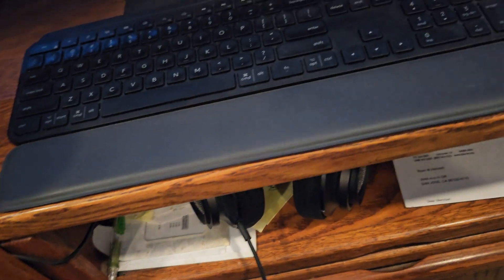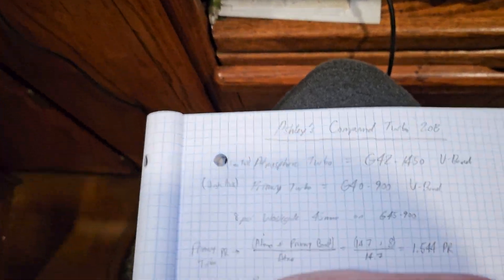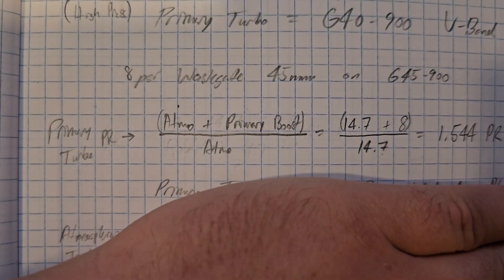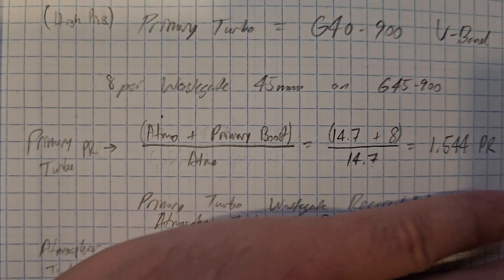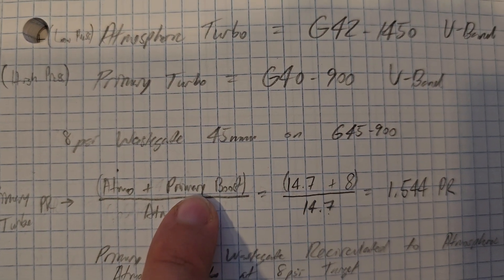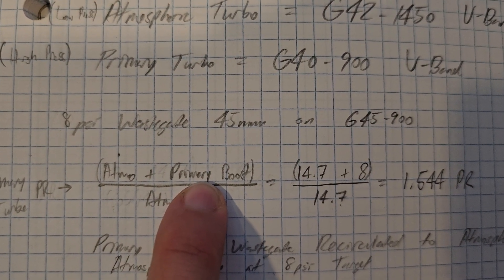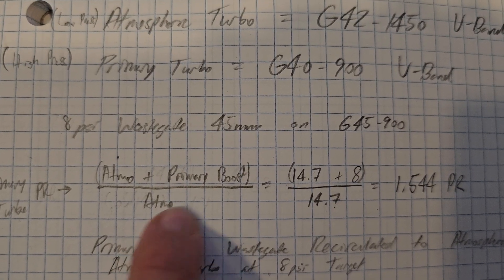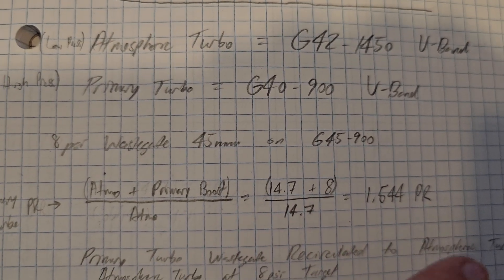Atmospheric stuff is your atmospheric pressure, 14.7, plus your boost pressure expected, divided by atmospheric. So 1.544, in that one example.